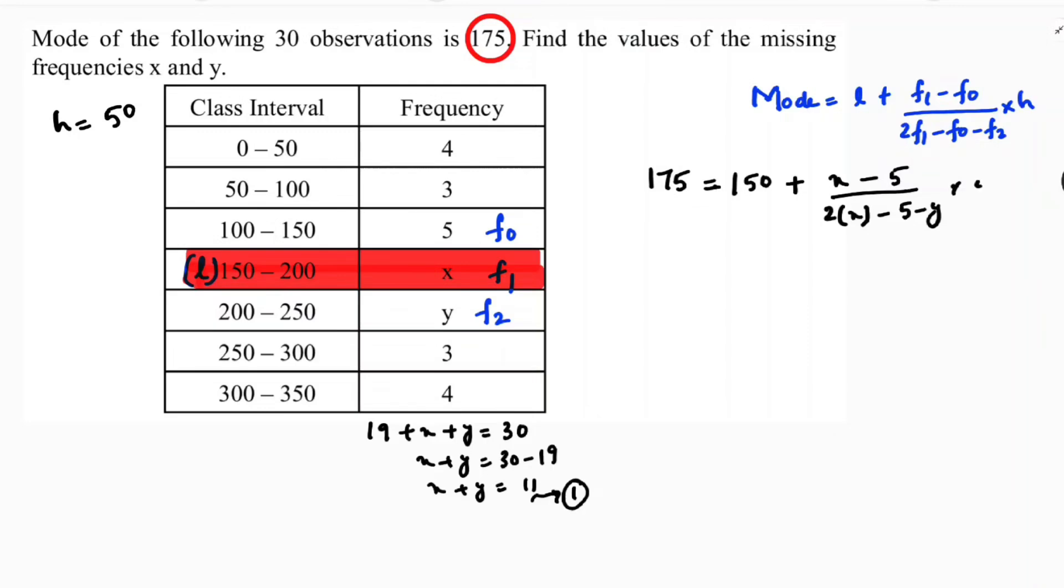Now if we transpose 150, 175 minus 150 equals x minus 5 by 2x minus 5 minus y into 50. Now here, 175 minus 150 is 25, is 25 equals x minus 5 by 2x minus 5 minus y into 50.